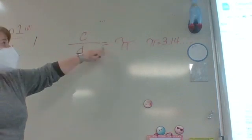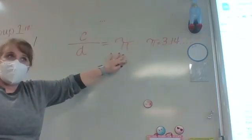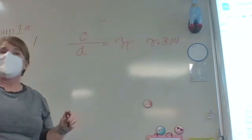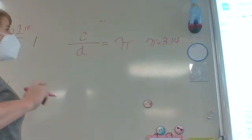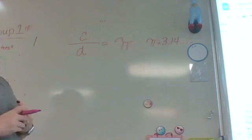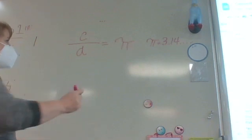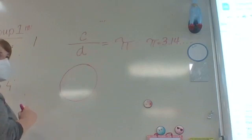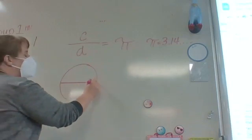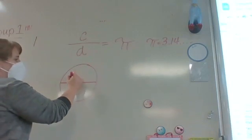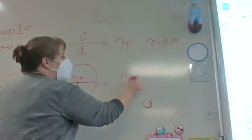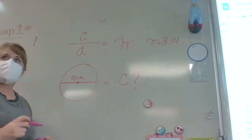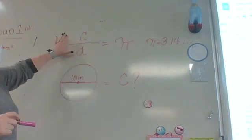Okay, all right, so the circumference divided by the diameter gives us the value of pi. Are you guys with me? So what if I asked you this? Just a second. What if I asked you or told you this: I have a circle, here's my circle, my diameter is 10 inches, and I wanted you to find out what my circumference would be?